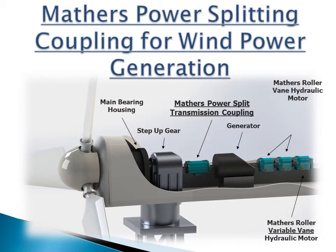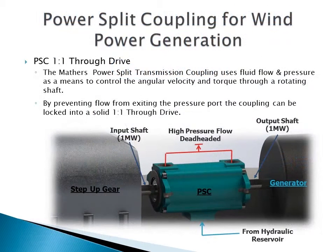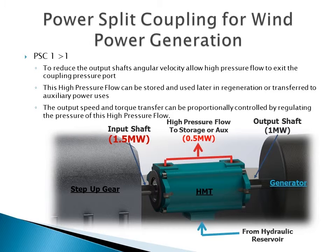This section outlines the Mathers power split functionality within a wind turbine application. Note the arrangement and labels of all relevant components, the position of the PSC coupling and the generator assist motors. The generator assist motors are positioned at the back of the through drive of the generator and are used in the regeneration function discussed later. When the wind is at or below rated wind speed, the PSC will transfer all available wind power through to the tower's generator. In higher than rated wind speed scenarios, the output shaft of the PSC and therefore the generator shaft can be modulated to provide a constant shaft speed with excess energy split to storage or auxiliary.